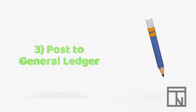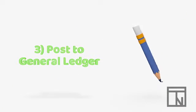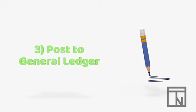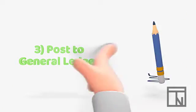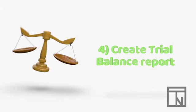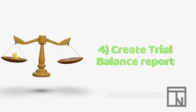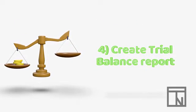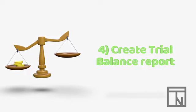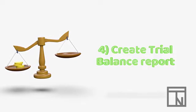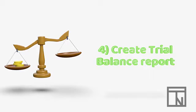Next, the general journal records get added to another record called a general ledger. Then a special report called a trial balance is created. This report ensures that all of the events were properly recorded before financial reports are created.